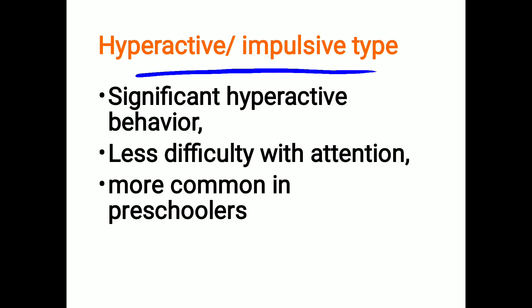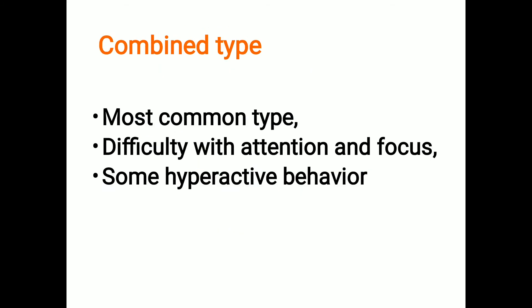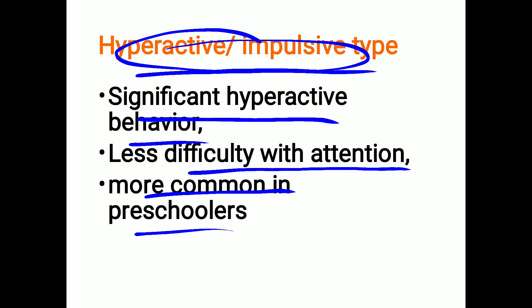In the hyperactive or impulsive type, there is significant hyperactive behavior but less difficulty with attention. This type is more common in preschoolers. The combined type is the most common type overall.